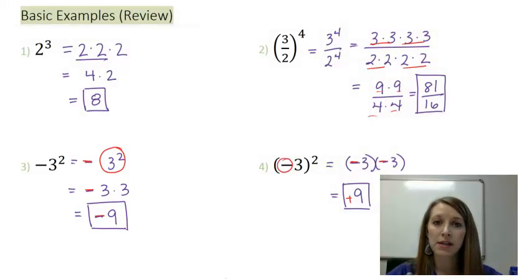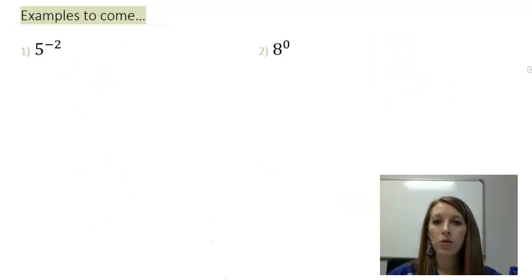Now again, these are just the basics, kind of talking about different versions of how exponents might look. Now, let me show you some more basic examples that we'll be learning how to do when we walk through all of these eight different properties that we need to talk about. So I have example one, five to the negative second power, and example two, eight to the zero power.